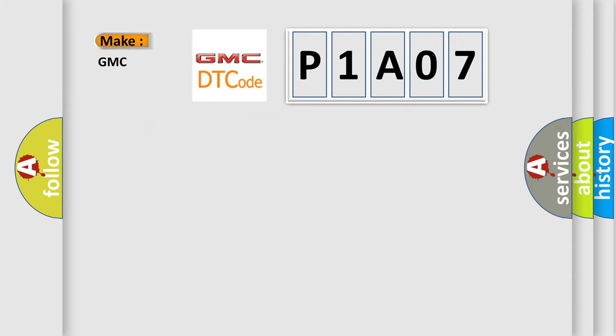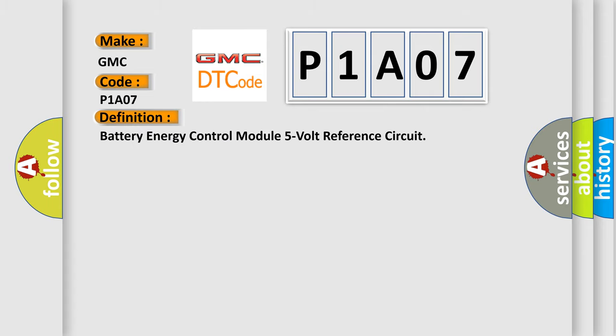So, what does the diagnostic trouble code P1A07 interpret specifically for GMC car manufacturers? The basic definition is: battery energy control module 5 volt reference circuit.